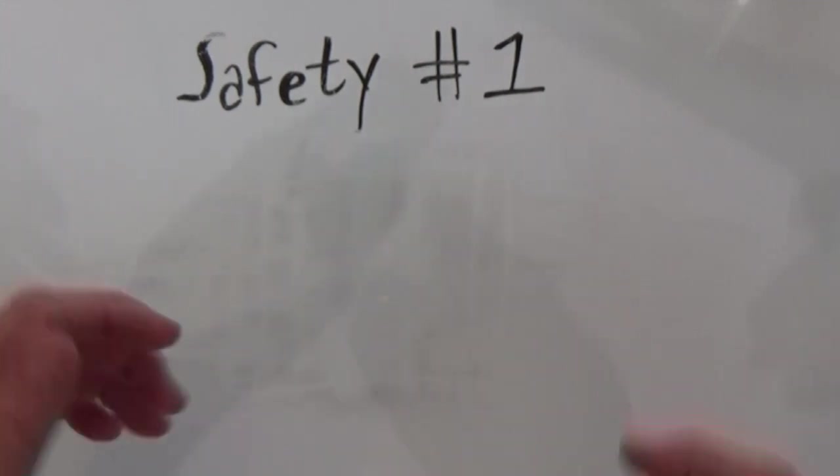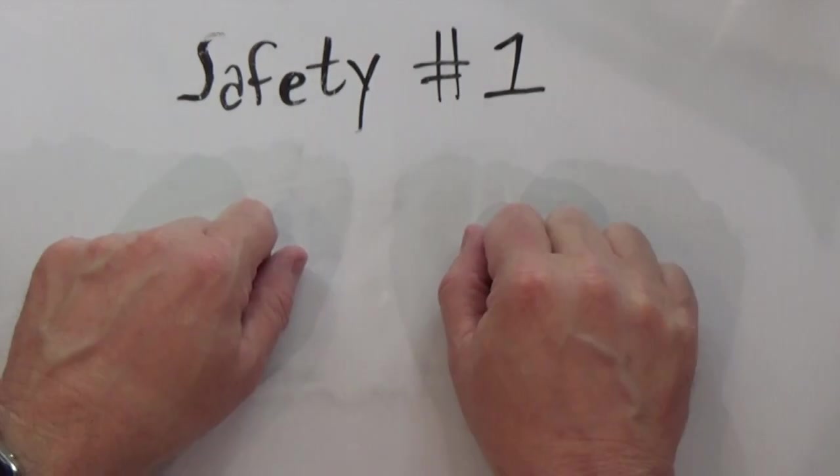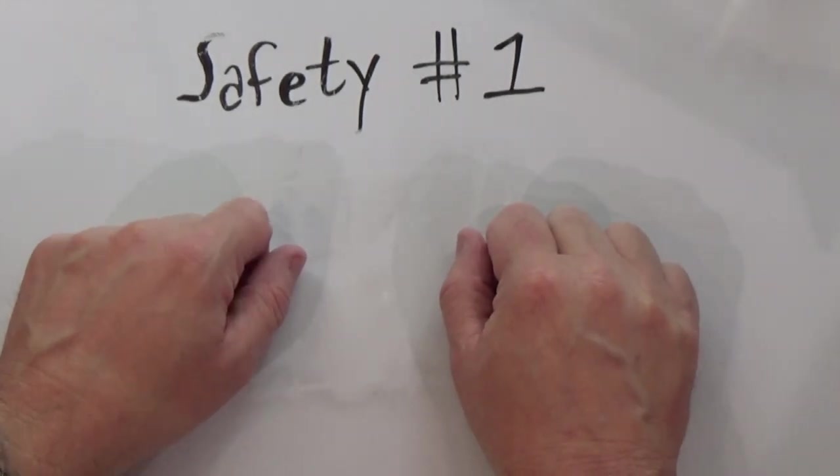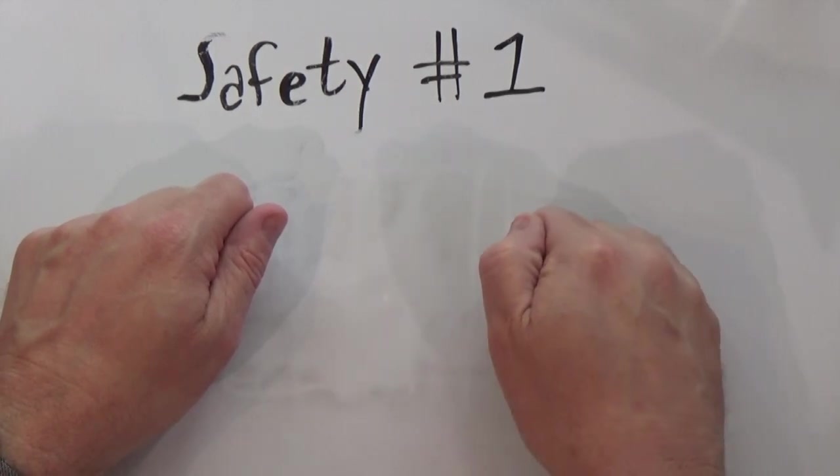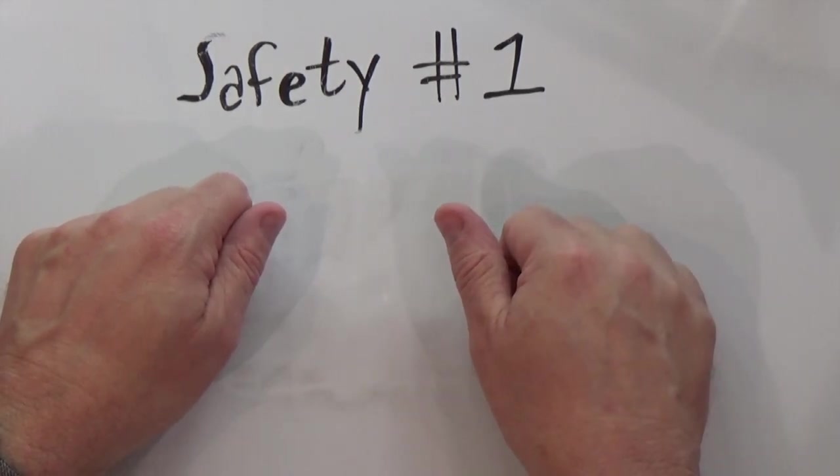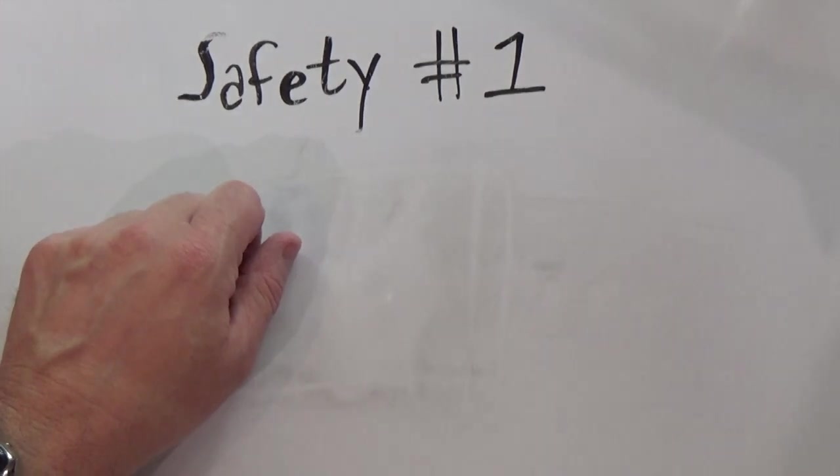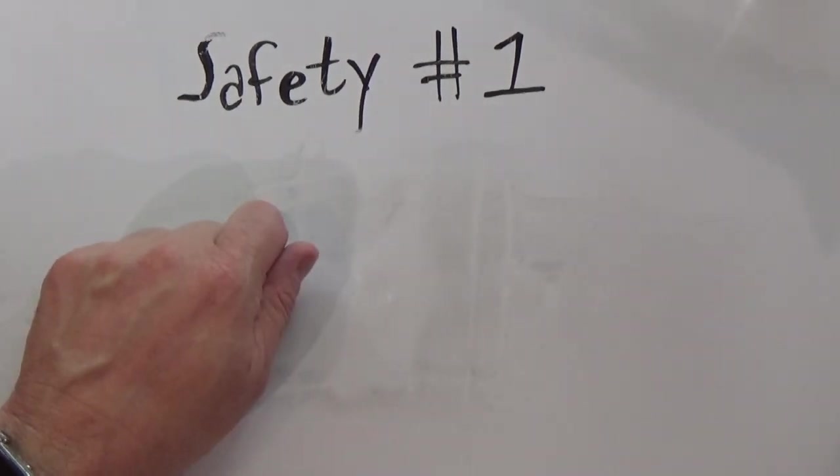The second thing is never have both hands in the chassis at the same time. Because what are you doing? You're completing a circuit. And what that does is it'll send electricity through your heart. Not a good place to be. So always work with one hand behind your back and one hand. Really important guys. It's very important that you do that.